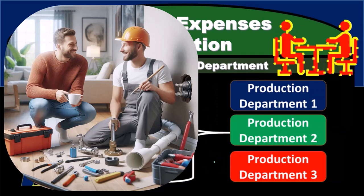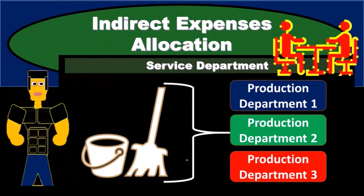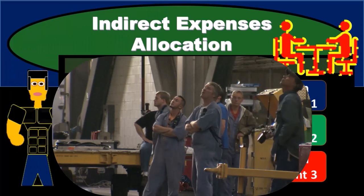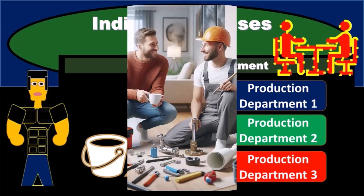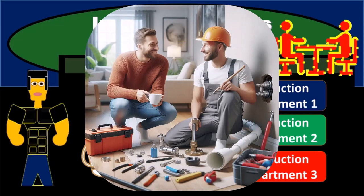To do that, we'll typically use some type of activity base in order to allocate the cost. For example, if we're talking about maintenance, usually the square footage that is being covered is going to be a relevant activity base, because it would seem reasonable that maintenance would spend more time on larger areas than smaller areas. Using a proportion of square footage as a percentage to allocate cost between departments seems like a fair way to go.